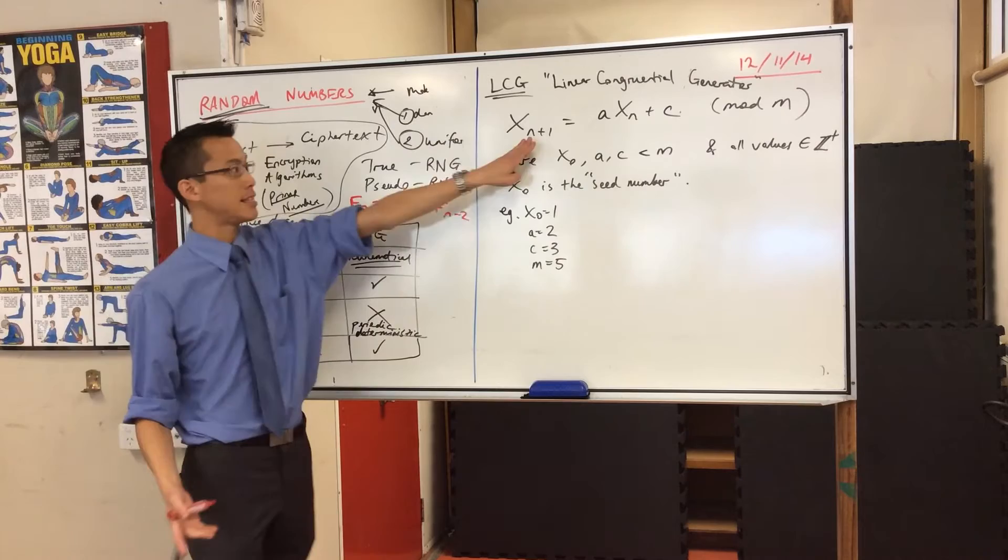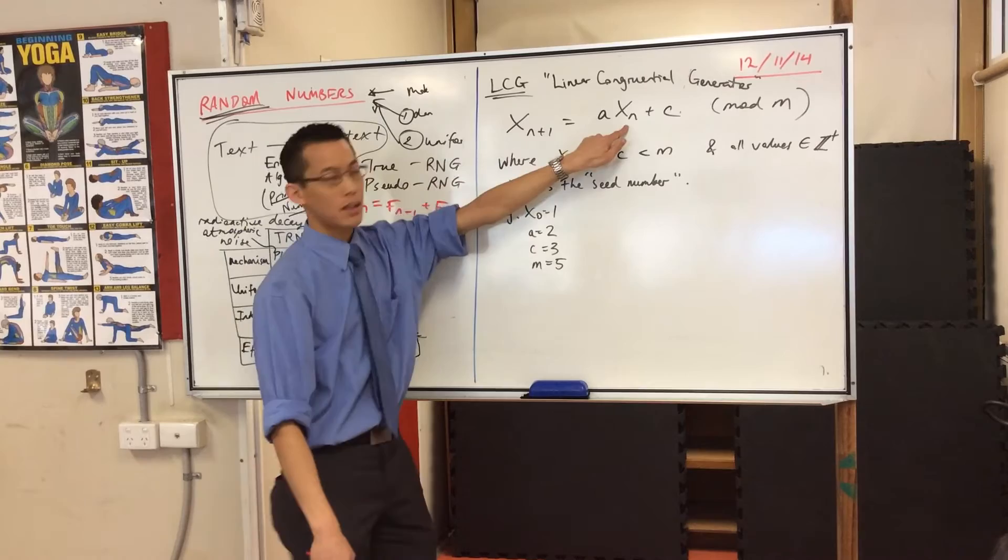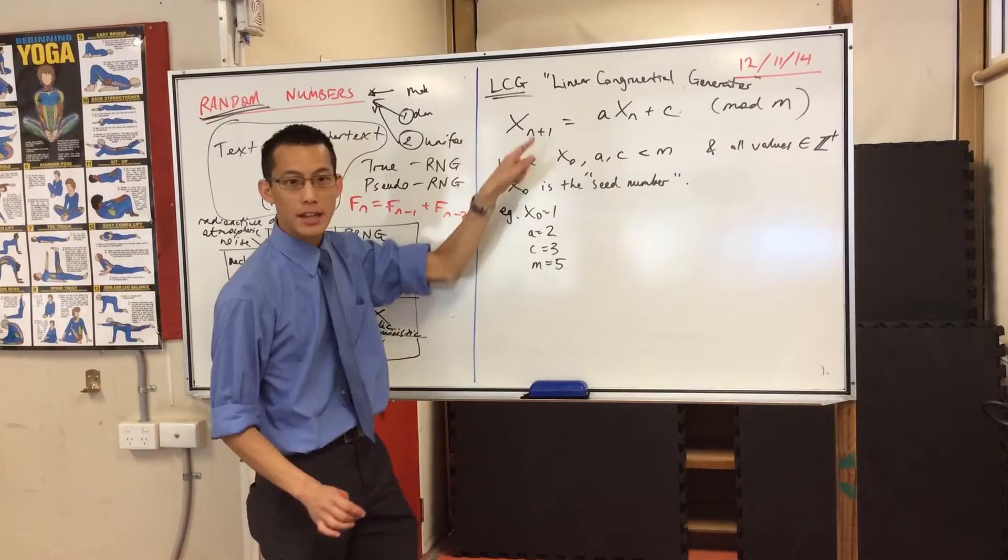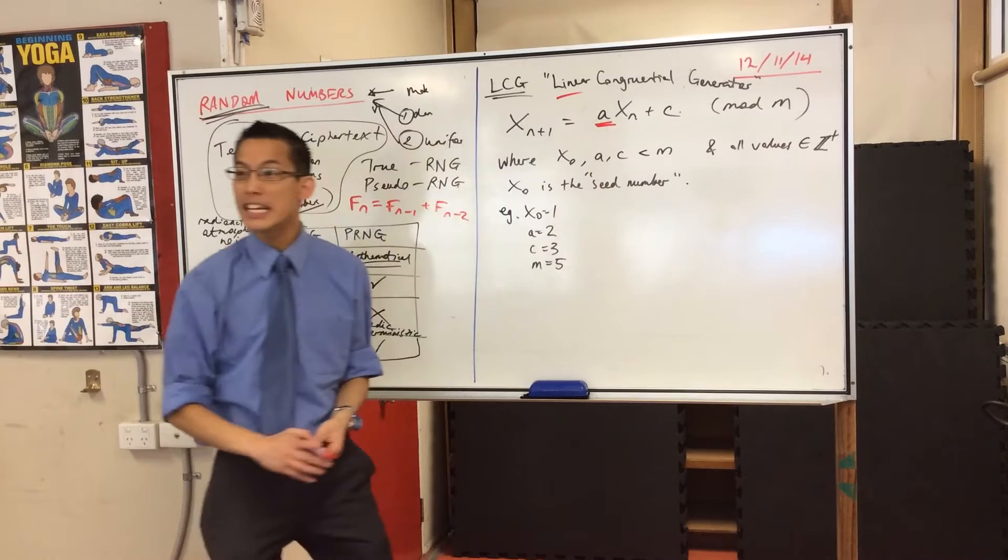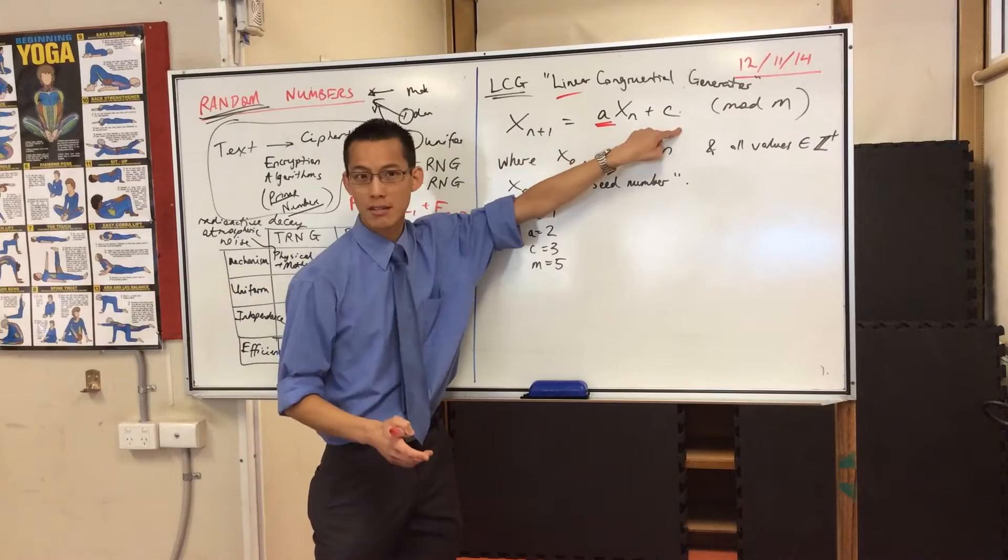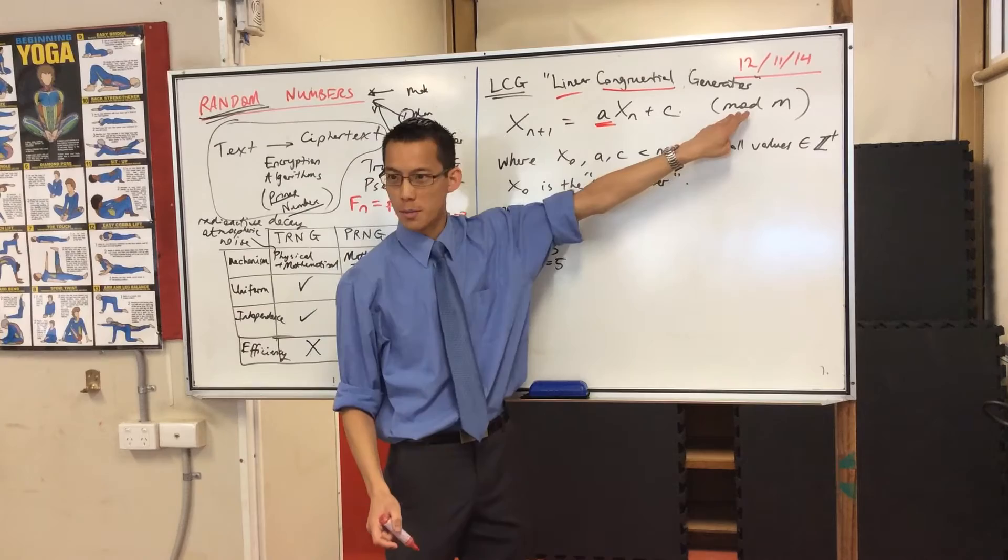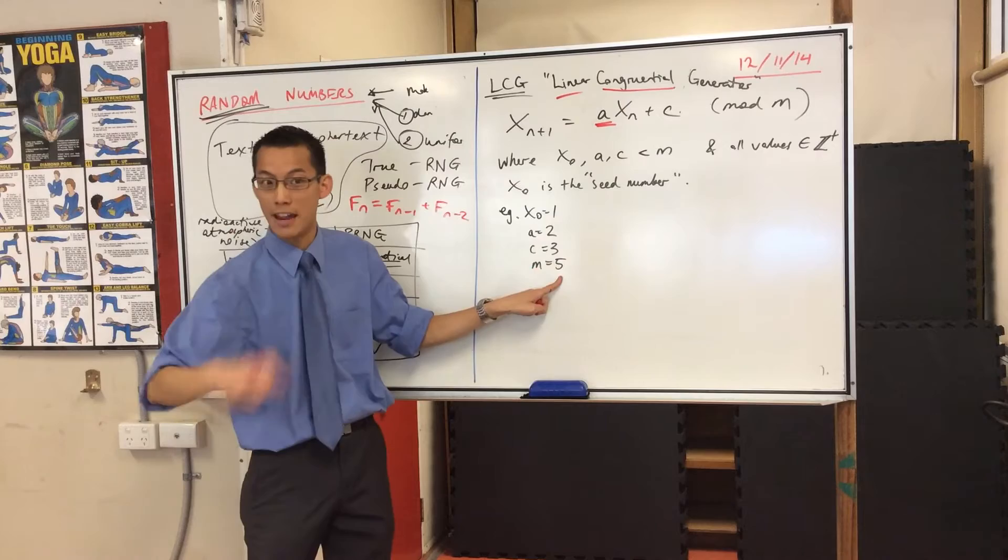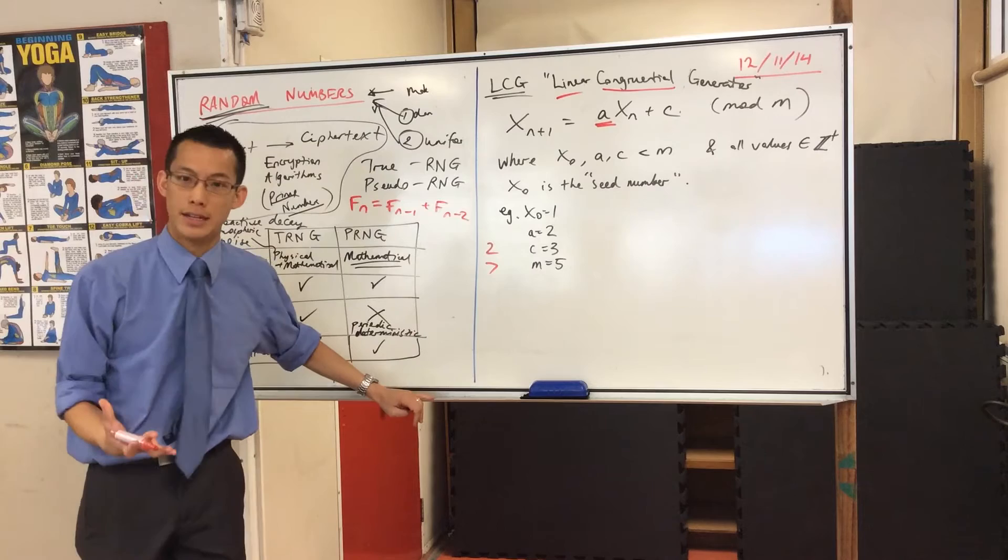If I want to know what the next number is, you take the previous number, multiply it by some number, add something, and then you do the remainder thing where we're looking at modular arithmetic. You can see where the name comes from. Linear comes from the a, it's a linear function. In a very crude way of thinking, this is mx plus b, this is a straight line. But it's congruential because of this modular arithmetic thing, the idea of numbers being congruent to one another. For example, if the modulus is five, two and seven in this game are congruent. They're the same number really, they're both going to reduce to two.